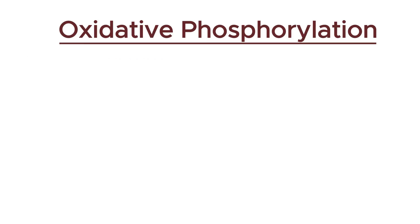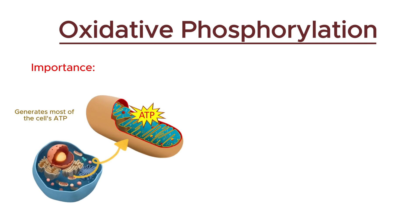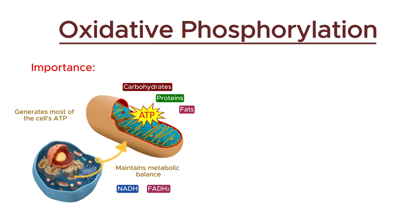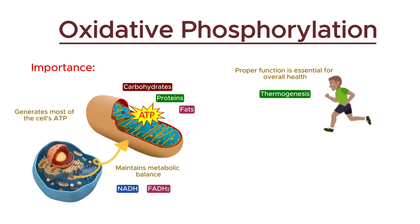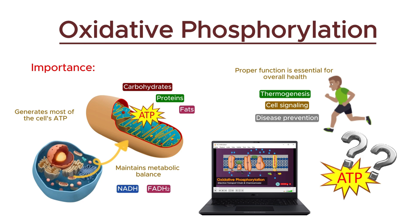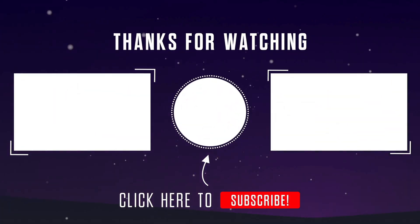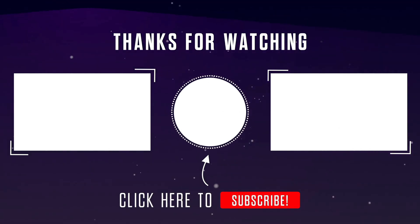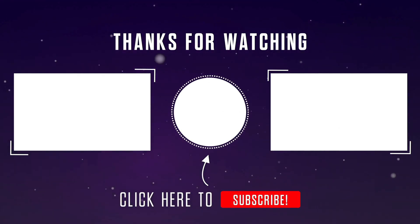Oxidative phosphorylation is crucial because it generates most of the cell's ATP — the primary energy currency — efficiently utilizing energy from nutrients. It also maintains metabolic balance by oxidizing NADH and FADH2, and its proper function is essential for overall health, impacting processes like thermogenesis, cell signaling, and disease prevention. In my next video, I'll dive into the details of how many ATP molecules are produced by utilizing a single glucose molecule. If you find this video helpful, please consider subscribing to BioScholar and sharing my videos with your friends. Thanks for watching.